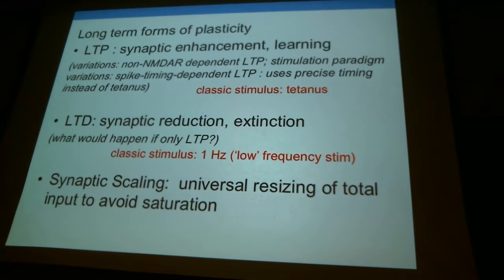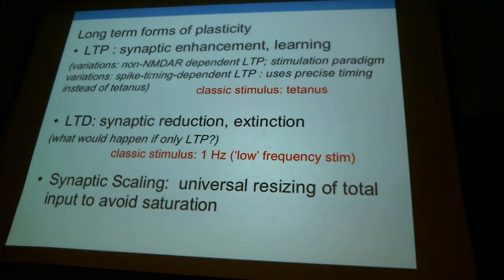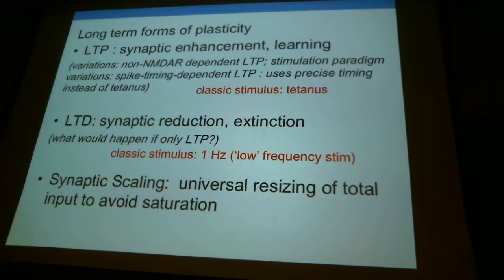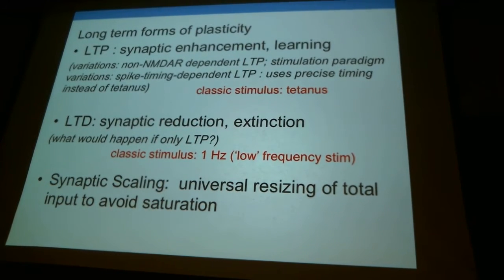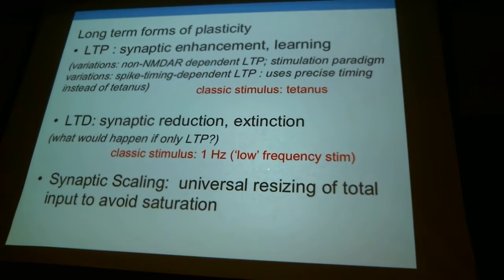To summarize these long-term forms of plasticity: LTP is a form of synaptic enhancement associated with learning. We've talked about NMDA receptor dependency as the coincidence detector for calcium influx. There are other forms of LTP that don't depend on NMDA receptors — for example those involving metabotropic receptors. The classic stimulus to elicit LTP is a tetanus, a short high-frequency stimulus. LTD is the opposite — synaptic strength reduction, or extinction. The classic stimulus associated with this is one-hertz, long, low-frequency stimulation.